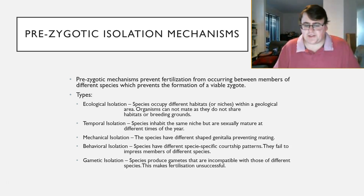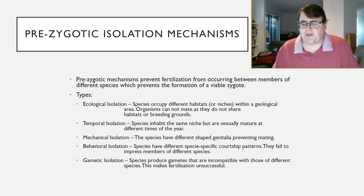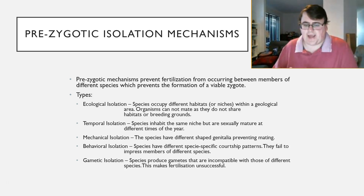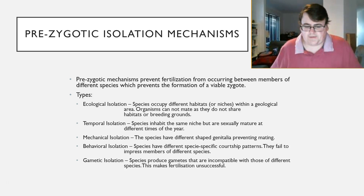Mechanical isolation — again, straightforward based on the name. The species have different shaped genitalia, which means they don't relate with each other and therefore can't physically mate. It's physically impossible to mate together. Think about dolphins and fish: they might inhabit the same habitat, but it's physically impossible for a dolphin to mate with a fish — that's mechanical isolation.